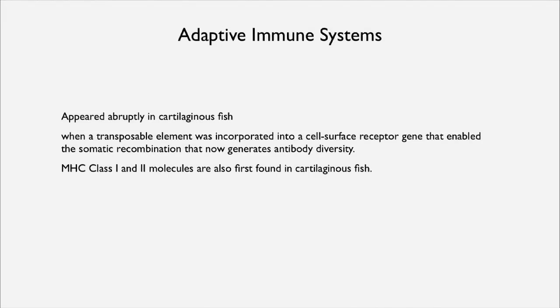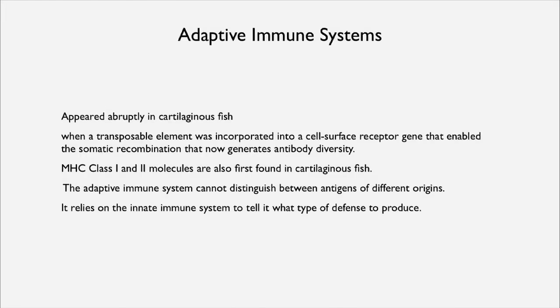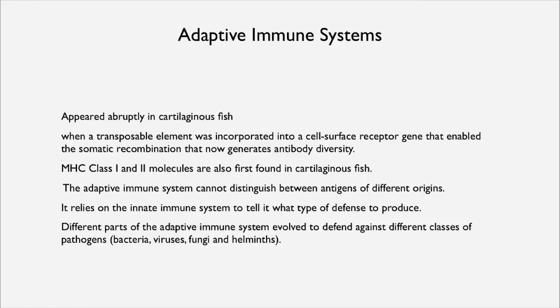Also, the major histocompatibility loci — the class 1 and class 2 molecules — which are a diverse array of molecules used in recognition of pieces of pathogens, are also first found in cartilaginous fish. So it was about 400 million years ago that the big important features of our adaptive immune system evolved. The adaptive immune system can't distinguish between antigens of different origins; it relies on the innate immune system to determine what kind of defense to produce, with different parts defending against different classes of pathogens — bacteria, viruses, fungi, and helminths or worms.